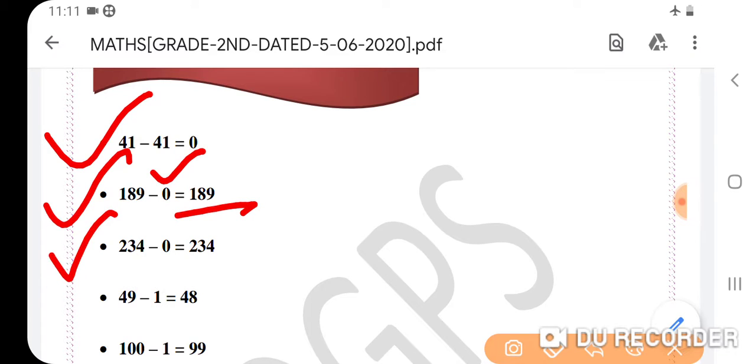The third example: 234 minus 0. Here the difference is 234, nothing has been taken away. Example 4: 49 minus 1 equals 48. We got the predecessor. 48 is the predecessor of 49 as only one thing has been taken away.